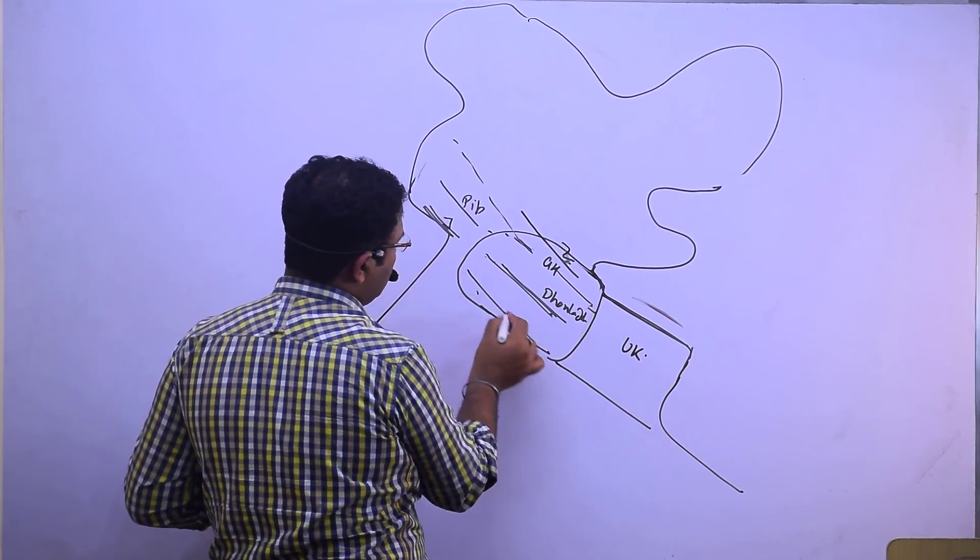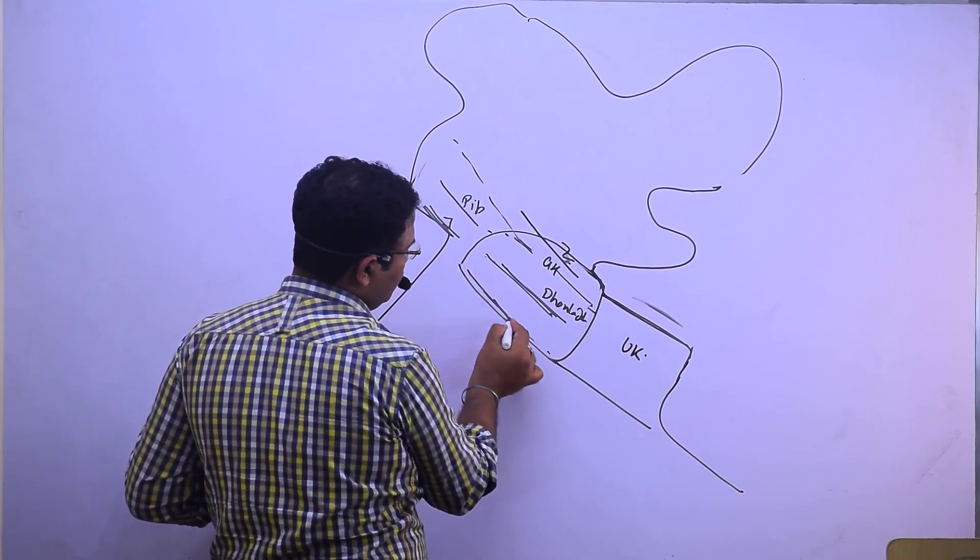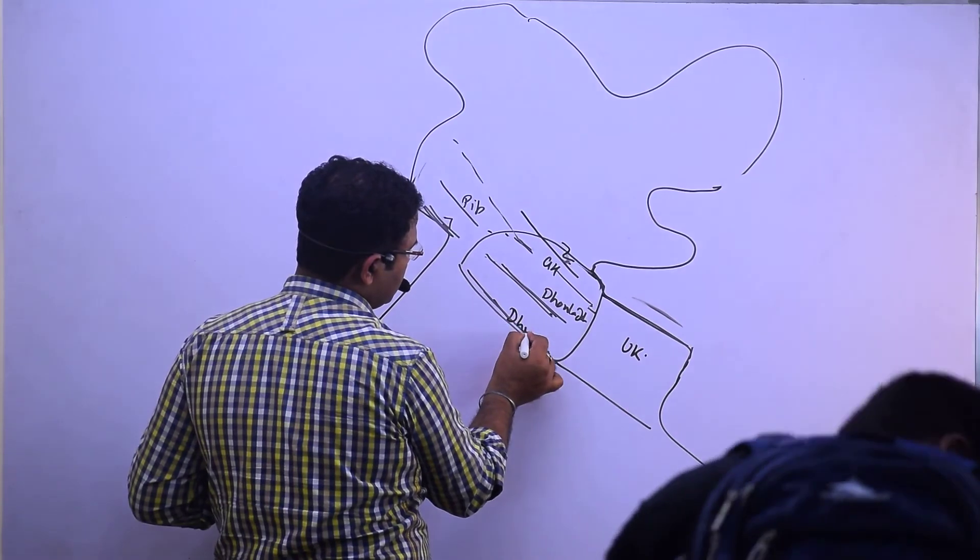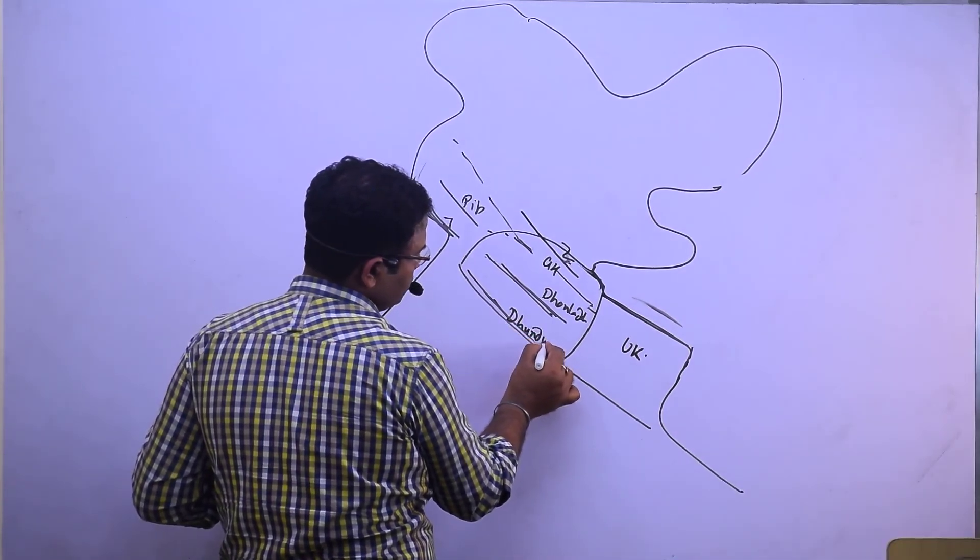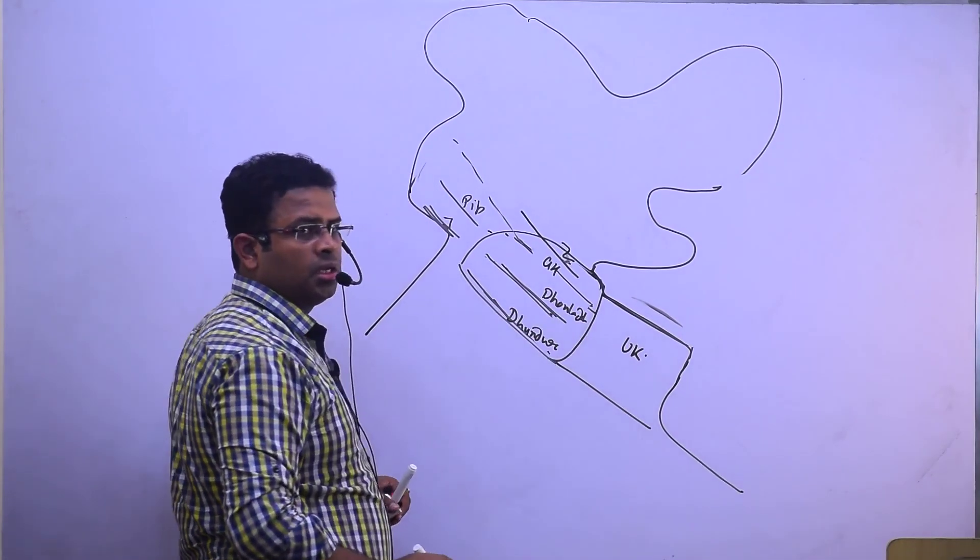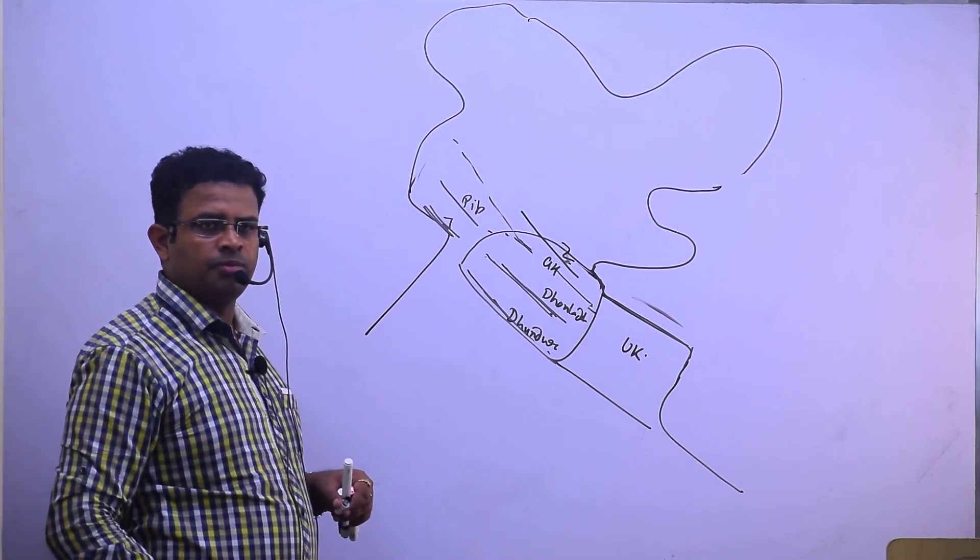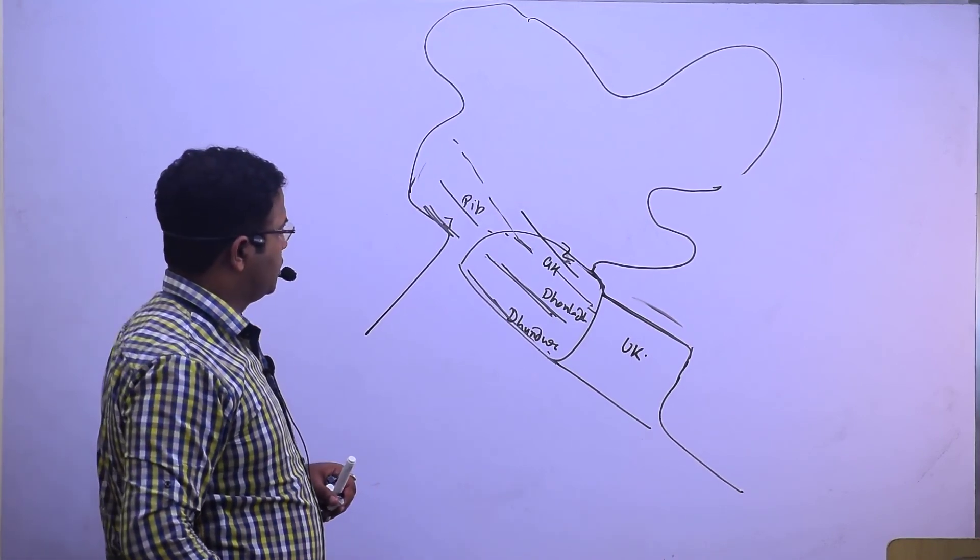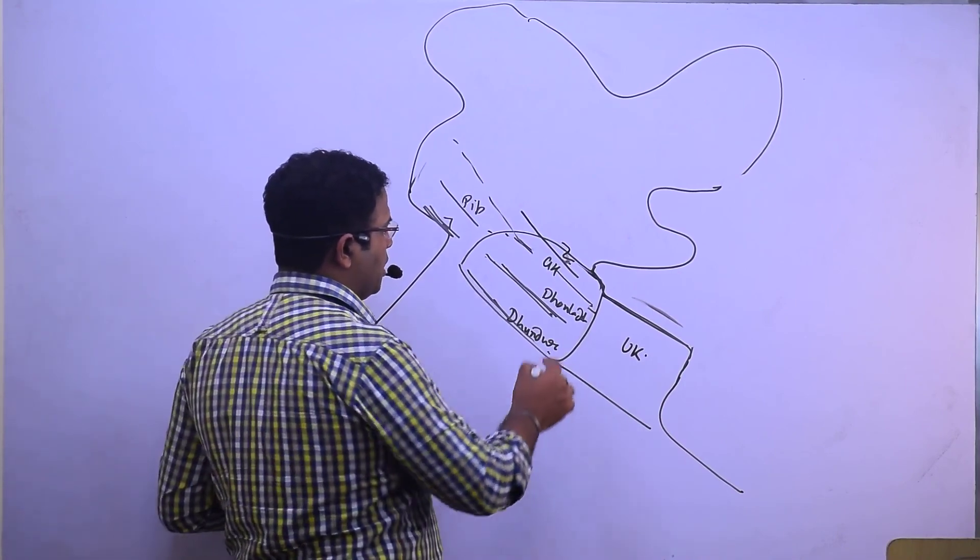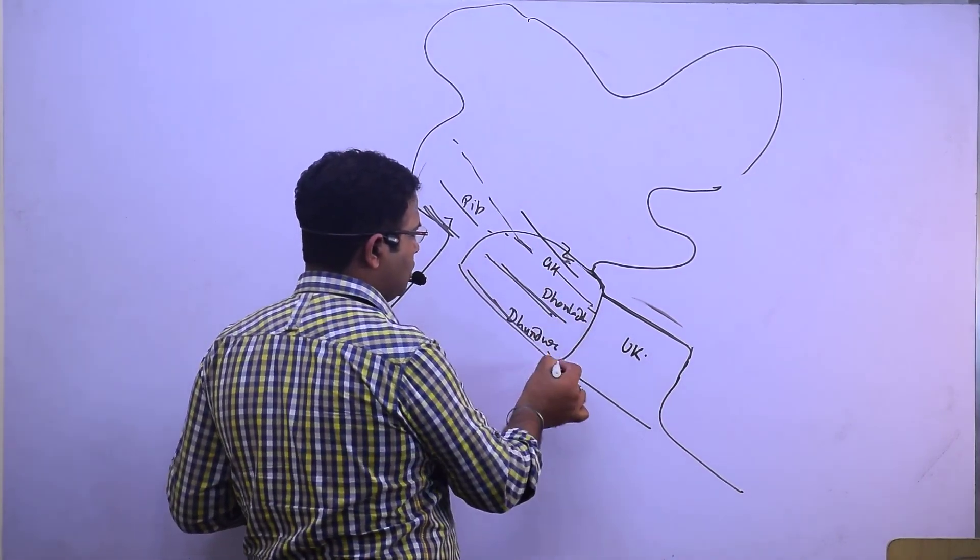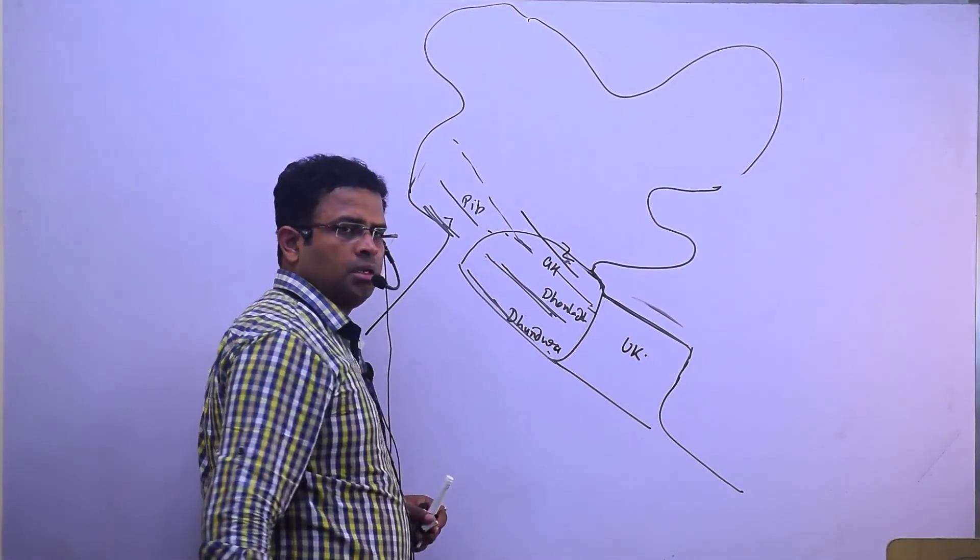And it is known as Dhundwa. D for Dhauladhar and D for Dhundwa. So the Greater Himalayas, Dhauladhar, and Dhundwa, these are the mountain ranges.